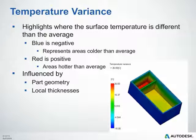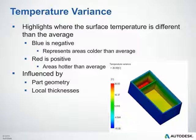The temperature variance plot highlights areas where the surface temperature differs from the average. Blue (negative) represents areas colder than average; red (positive) represents areas hotter than average. This is influenced by part geometry and local thicknesses. A smaller absolute range is better — 5 degrees Celsius is optimum for crystalline and semi-crystalline materials, and under 10 degrees Celsius is acceptable for amorphous materials. If tolerances are difficult to achieve, consider redesigning your cooling layout or adding bubblers or baffles into deep areas.